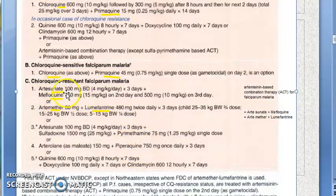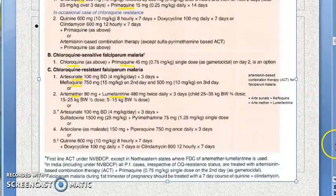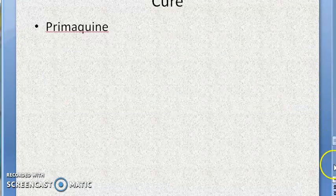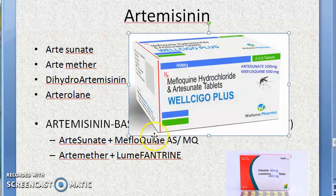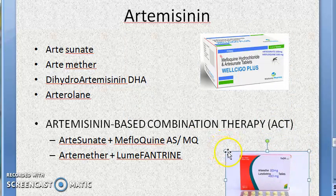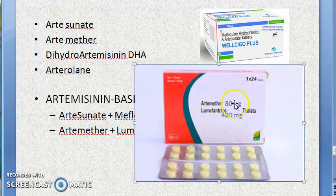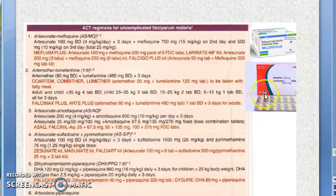The dosage forms are all oral tablets. The dose for artesunate is 100 mg and mefloquine is around 500 mg. For artemether it is 80 mg and lumefantrine is 480 mg. To help remember, try putting these in the form of a diagram.